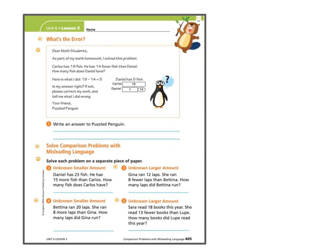Alright, Puzzle Penguin. Is he right? No. He says, Dear math students, as part of my homework I solved this problem. Carlos has 19 fish. So C is Carlos. He has 14 fewer fish than Daniel. How many fish does Daniel have?